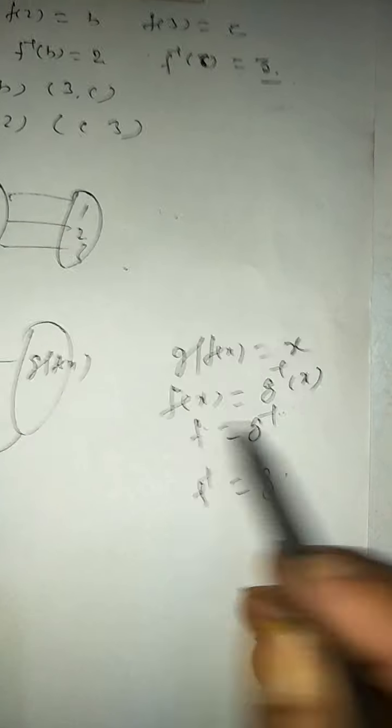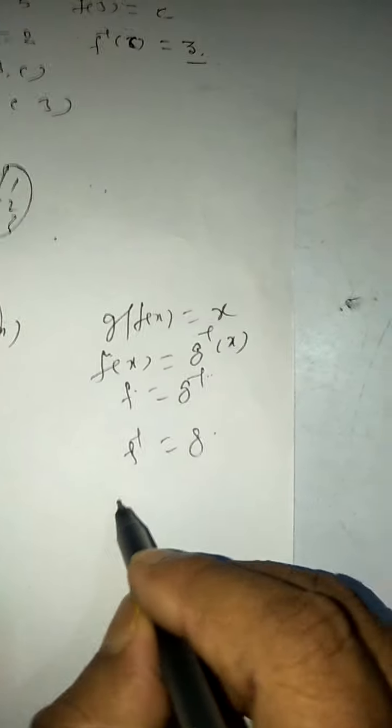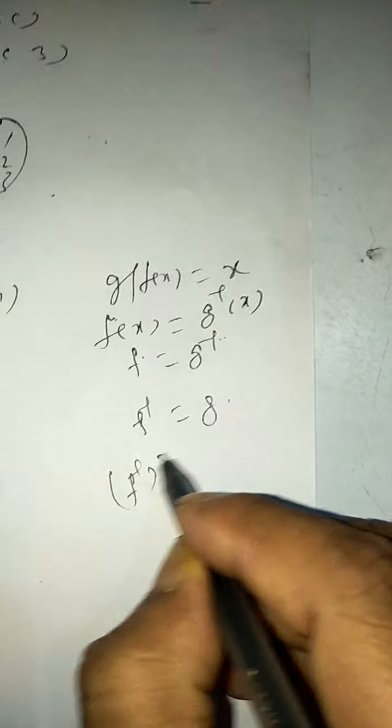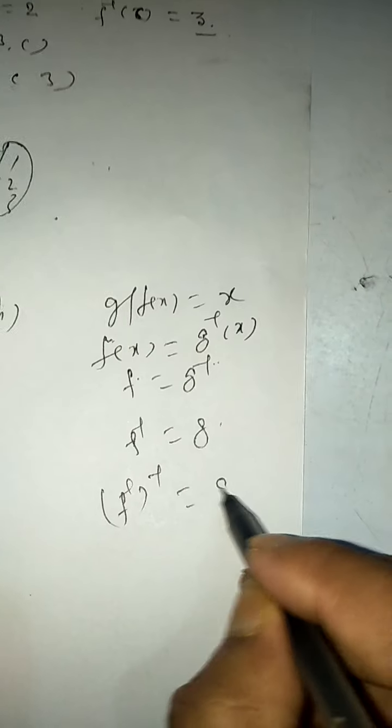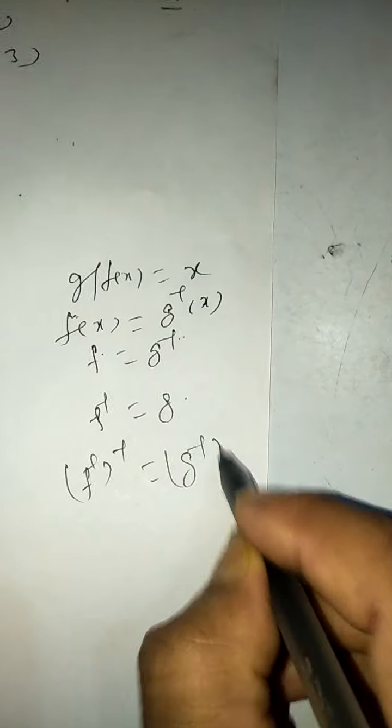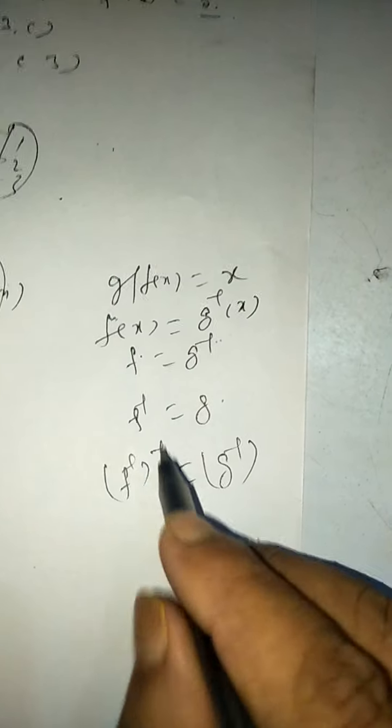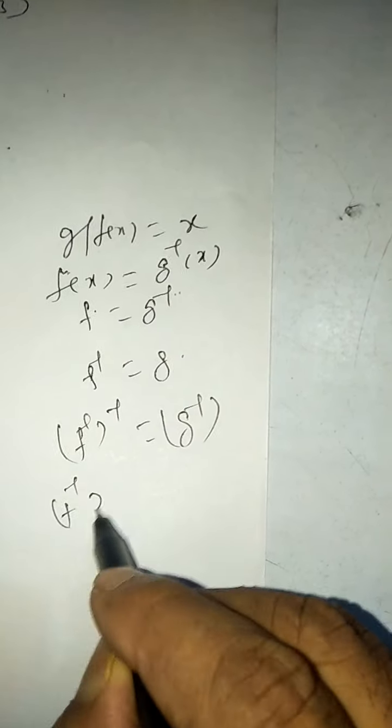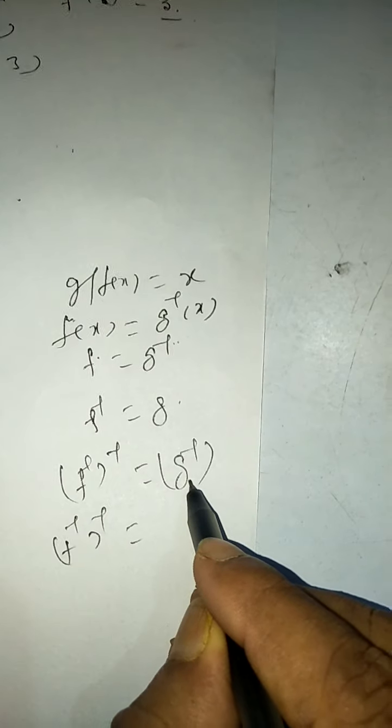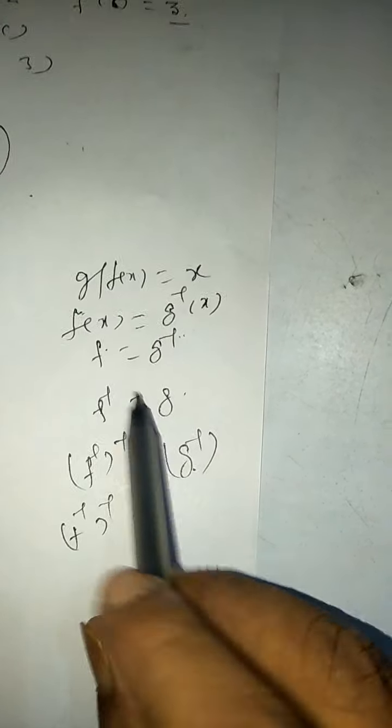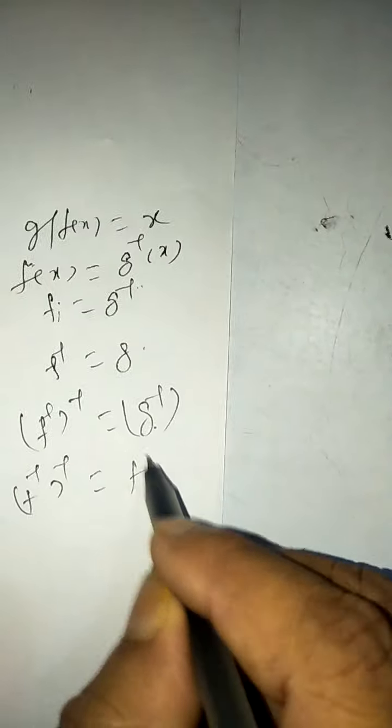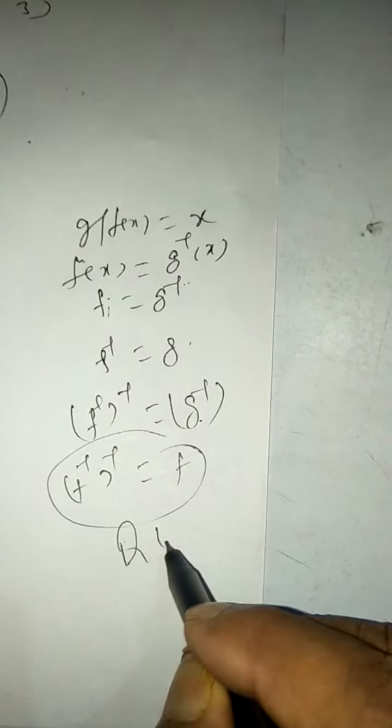G equals F inverse. Now we will take this inverse. F inverse is the inverse, then G will take this inverse. If you apply both sides G inverse, then F inverse is the inverse and G inverse is equal to G. Here is F. This is F. So we will prove it this way.